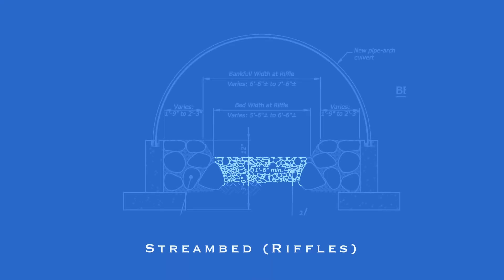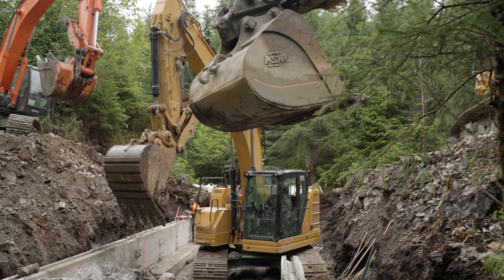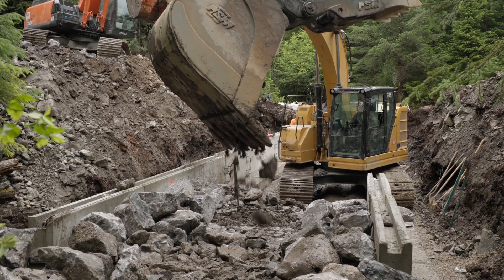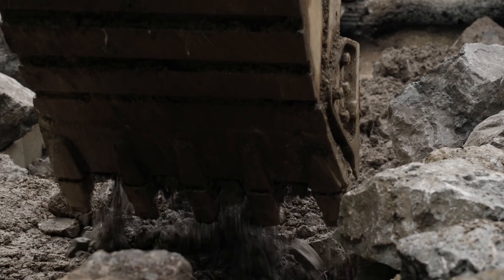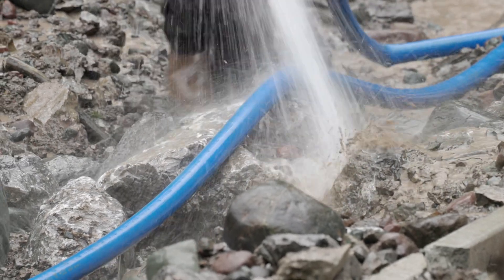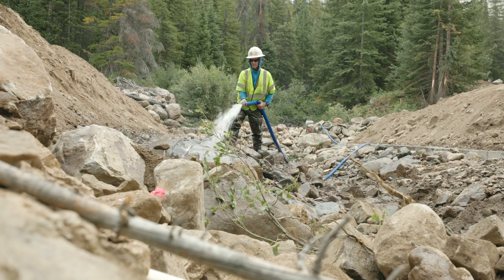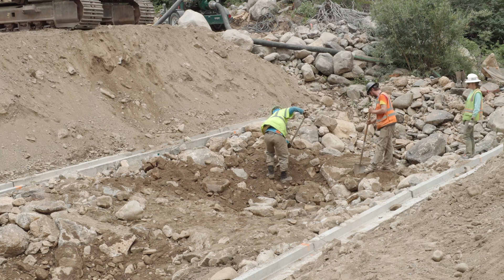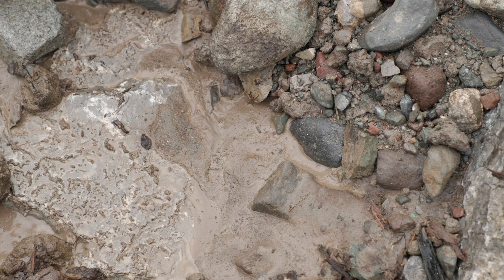On most plan sets, areas between key features like ribs, steps, and pools are defined as riffle sections. These make up the majority of the streambed channel and are typically made of streambed material and large isolated rocks if the plans call for them. To construct these sections, crews start by laying down a layer of streambed material, then use water pressure, tamping rods, or similar hand-operated equipment to force fine material into every surface void. This process is continued in layers until the channel reaches the correct width and height defined in the plan set. The final stream channel should be dense and interlocked with low permeability.